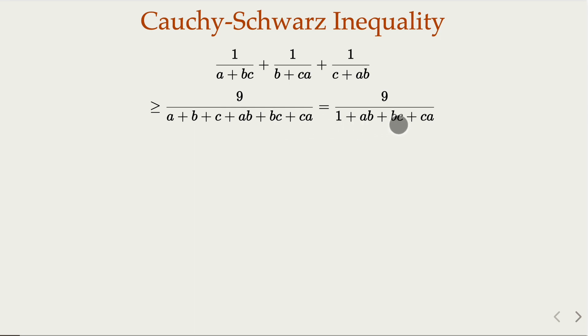So what about ab, bc, and ca? Now here, you notice that a plus b plus c equal to 1, you square it. You're going to have this term here.